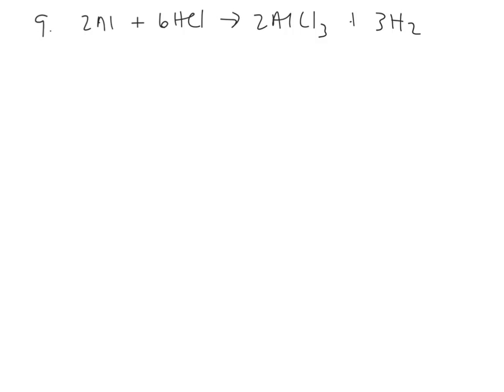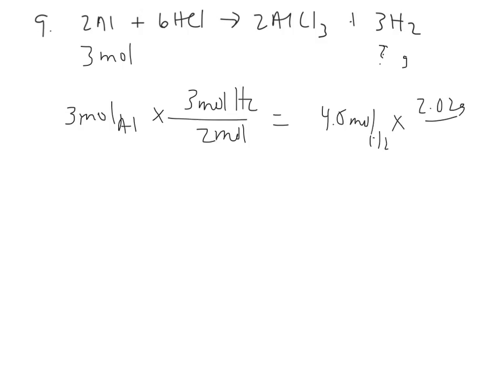So number 9 wants to know how many grams of H2 can you produce from 3 moles of Al. And they give you the balanced equation. So I can go ahead and convert my 3 moles of Al. I see that I get 3 moles of H2 per 2 moles of Al. So it's about 9 halves or 4 and a half moles of H2. And at 2.02 grams per mole, this is right around 9 grams or that fits with letter D.